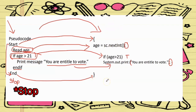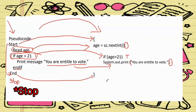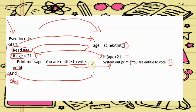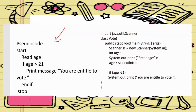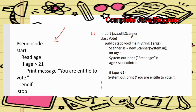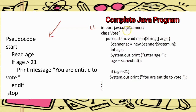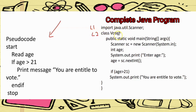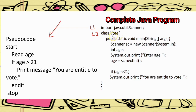Next, we see how to write a complete Java program for this problem statement. First, on the first line, you must write import java.util.Scanner. Remember, this is the Scanner class which is defined in the java.util package. Then the second line is the class name — here I write class Vote, based on the problem statement.